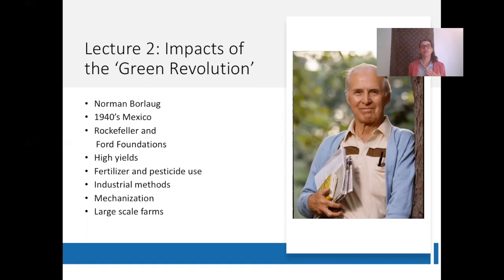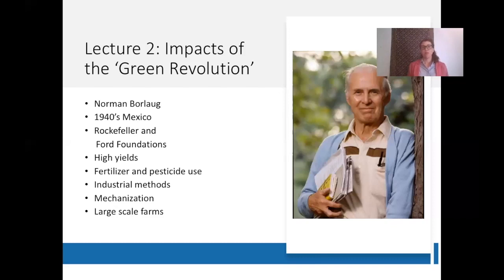The Green Revolution technology spread throughout the world in the 1950s and 60s, which significantly increased the number of calories produced per acre of agriculture. These technologies were spreading throughout the world — the United States, for example, imported about half of its wheat in the 1940s, but after employing these green technologies, it had become self-sufficient by the 1950s and a major exporter of wheat by the 1960s.